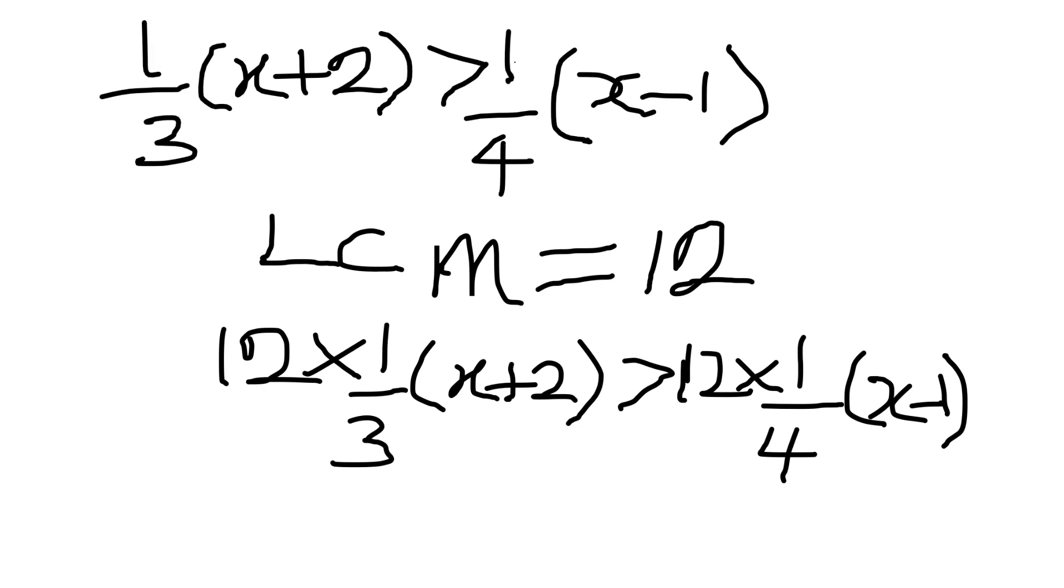Very good. So in this state, since they are multiplying, we can cancel out. So 3 goes into 3, 1 goes into 12, 4. 4 goes into 4, 1 goes into 12, 3.